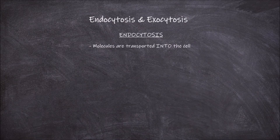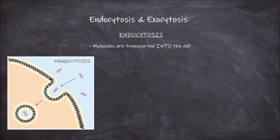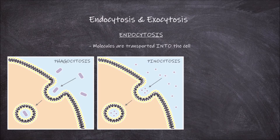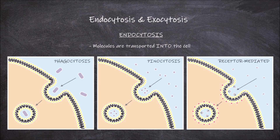There are three main forms of endocytosis. Phagocytosis is a form of endocytosis that involves the cell engulfing larger substances. Pinocytosis is when the cell is engulfing liquids or substances dissolved in liquids. Receptor-mediated endocytosis is when the cell membrane has pits that are coated with proteins on the inside of the cell and receptors on the outside. The receptors bind to specific molecules outside the cell and form protein-coated vesicles inside the cell.